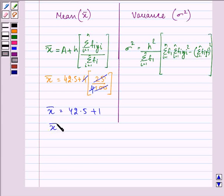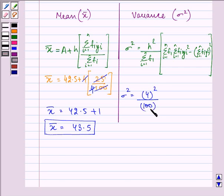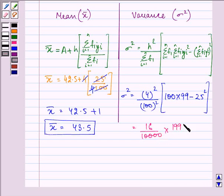Now here, we have the variance equal to 4 square upon 100 square into 100 into 99 minus 25 square. Let us simplify it further. So we have 16 upon 100,000 into 19900 minus 625.